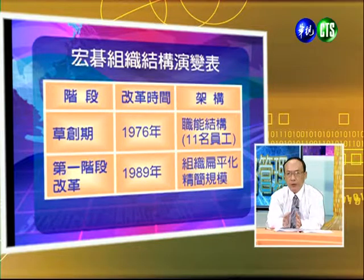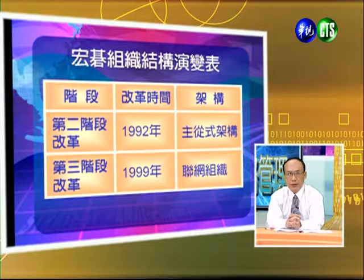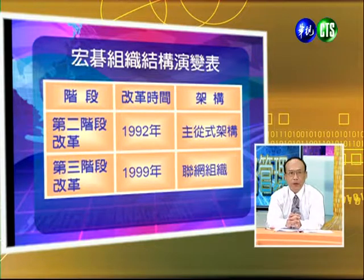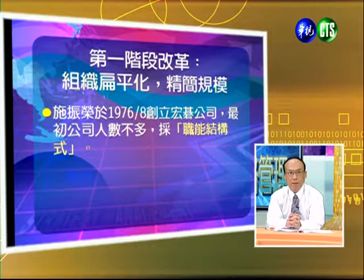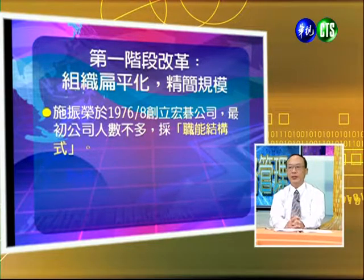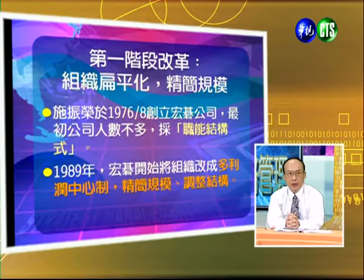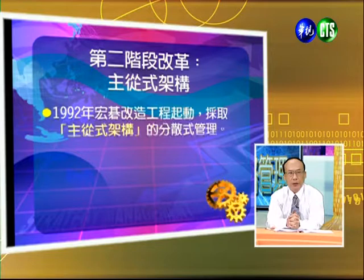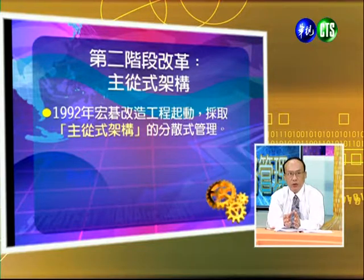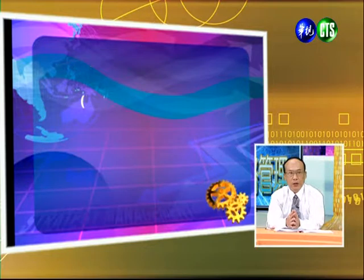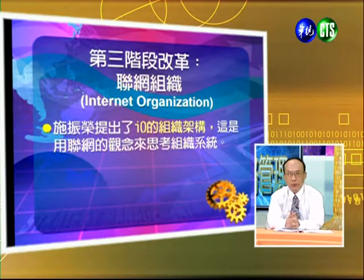宏碁的組織改變大概可以從幾個方向來看。第一，在1976年草創期，採用職能式的結構，只有11個員工。到了1989年第一階段改革，組織扁平化，採取精簡的方式。在1992年第二階段改革，從扁平式變成主從式的架構，採取分散式的管理，各個事業體獨立運作，同時必須相互支援其他的事業單位。在1999年進行第三階段，就是聯網組織。